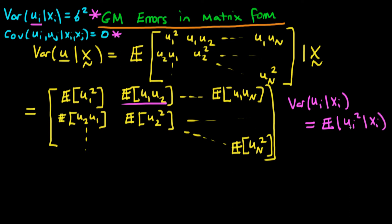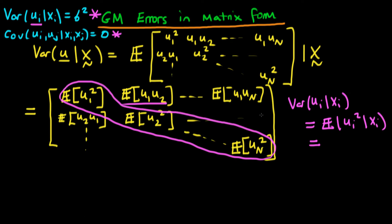And we've actually got this already. These are each of our diagonal components, and we know from the scalar model that we require each of these diagonal components in our matrix to be exactly the same — they all have to be equal to sigma squared. So we're going to make each of these diagonal components equal to sigma squared in our new matrix.